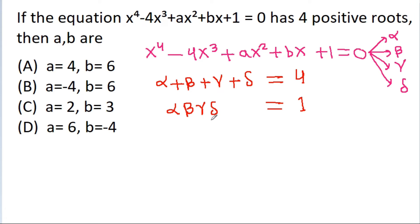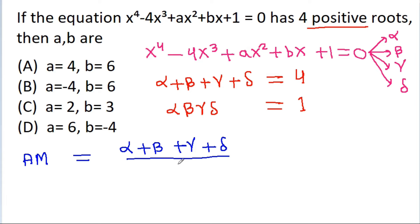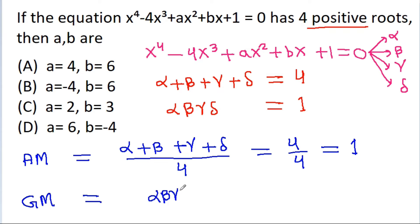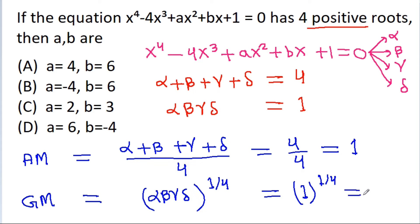It is given that all 4 roots are positive, so we can use the concept of AM-GM. AM = (alpha + beta + gamma + delta) / 4 = 4/4 = 1. GM = (alpha·beta·gamma·delta)^(1/4) = 1^(1/4) = 1. So we get AM = GM.